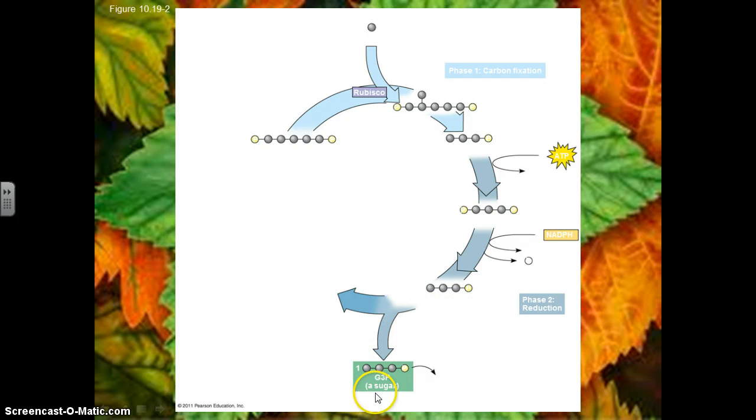So essentially, we kick out one three-carbon sugar. The process continues on with the rest of the molecules, and they continue on, and ATP comes along, destabilizes it again, and then it's ready to pick up another carbon dioxide.